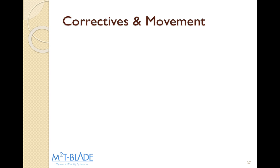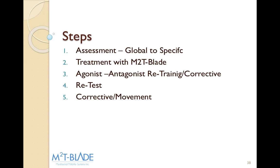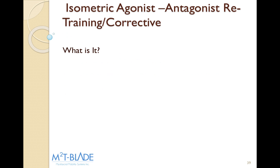Now let's go through our corrective and movement work. We've covered assessment, then treatment, and now we're going through how we want to correct it. Correctives can be a whole course on their own, but I'll give you a quick, easy way to do these. You want to assess, you want to treat, and you want to retrain your client on how to move properly. To review it all: we assess, we treat with the M2T blade, we go into our agonist-antagonist retraining, we retest, and then go through our corrective movements.